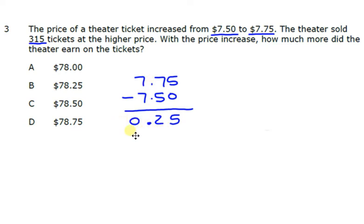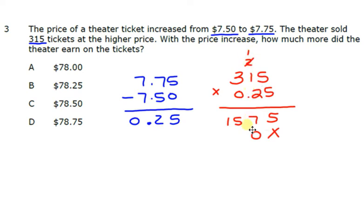So they increased the ticket price by 25 cents. But now let's apply that to 315 tickets and see how much money they ended up making. So here we go. Five times five is 25. Carry the two. Put the five down here. Five times one is five, plus two is seven. Five times three is 15. We're done with the five, so we're going to put an X here as a placeholder. Two times five is ten. Put a zero. Carry the one. Two times one is two, plus one is three. Two times three is six.